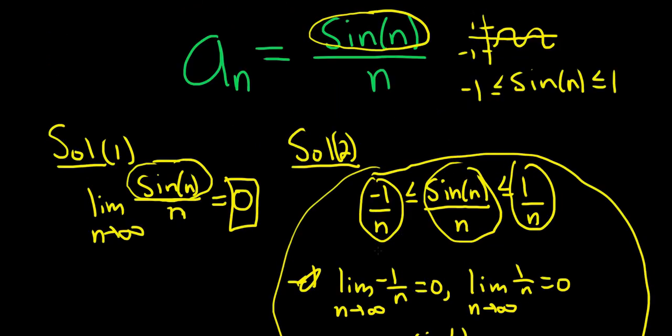This always works, by the way, when you have a cosine or a sine divided by n to some power. You can always use the squeeze theorem to basically prove—this is a proof, a rough proof—to prove that it's equal to zero.